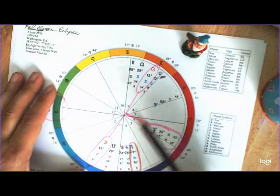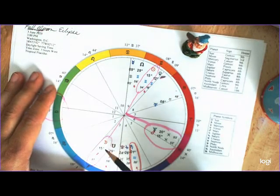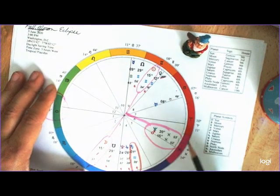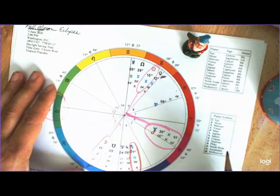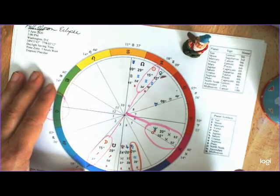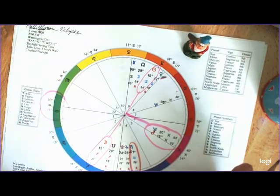So this full moon eclipse is occurring at 15 Sag, and the only aspect we're seeing here is a T-square to Mars and Neptune. So in theory, a full moon eclipse making a T-square to Mars and Neptune could be a number of things.